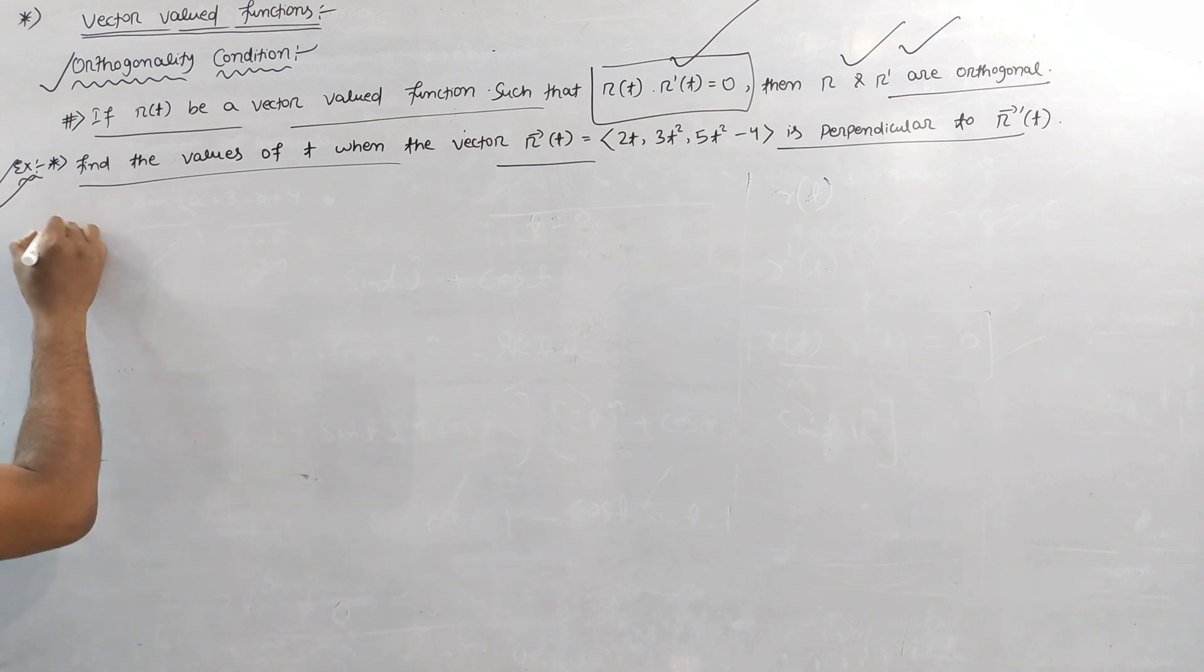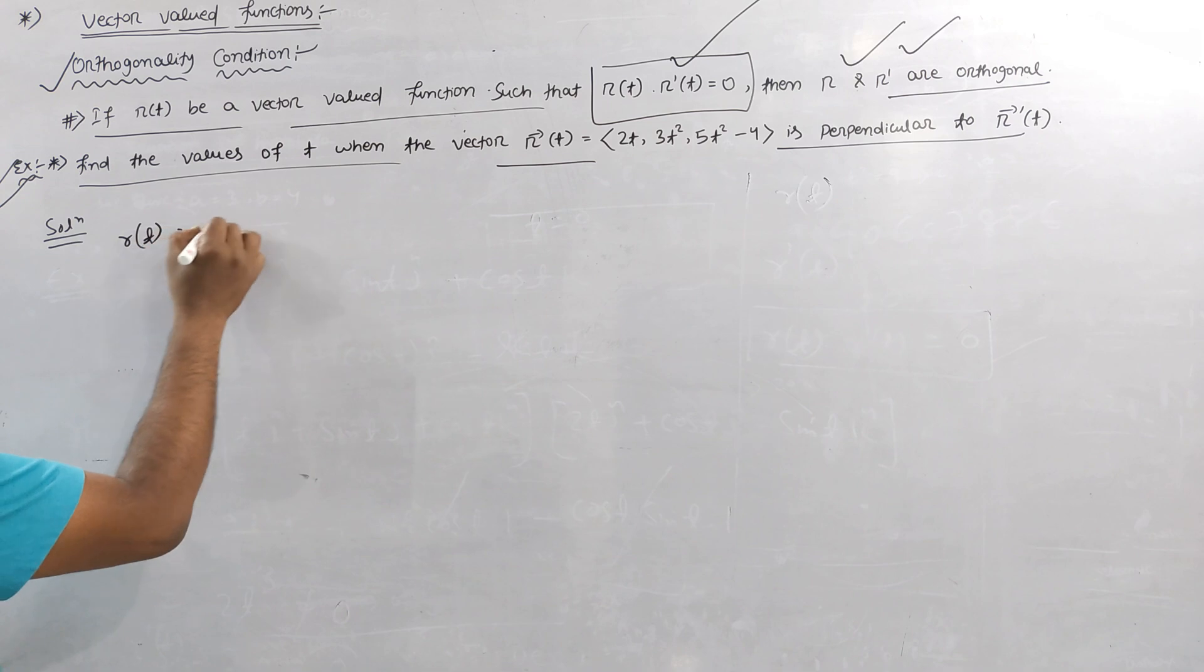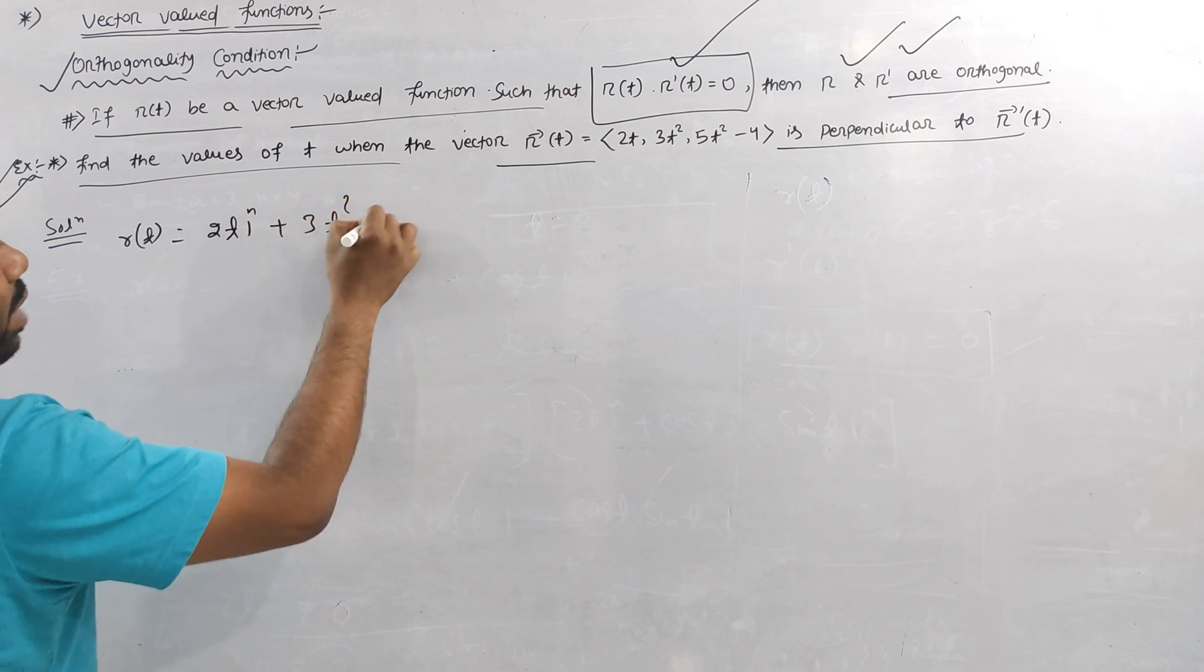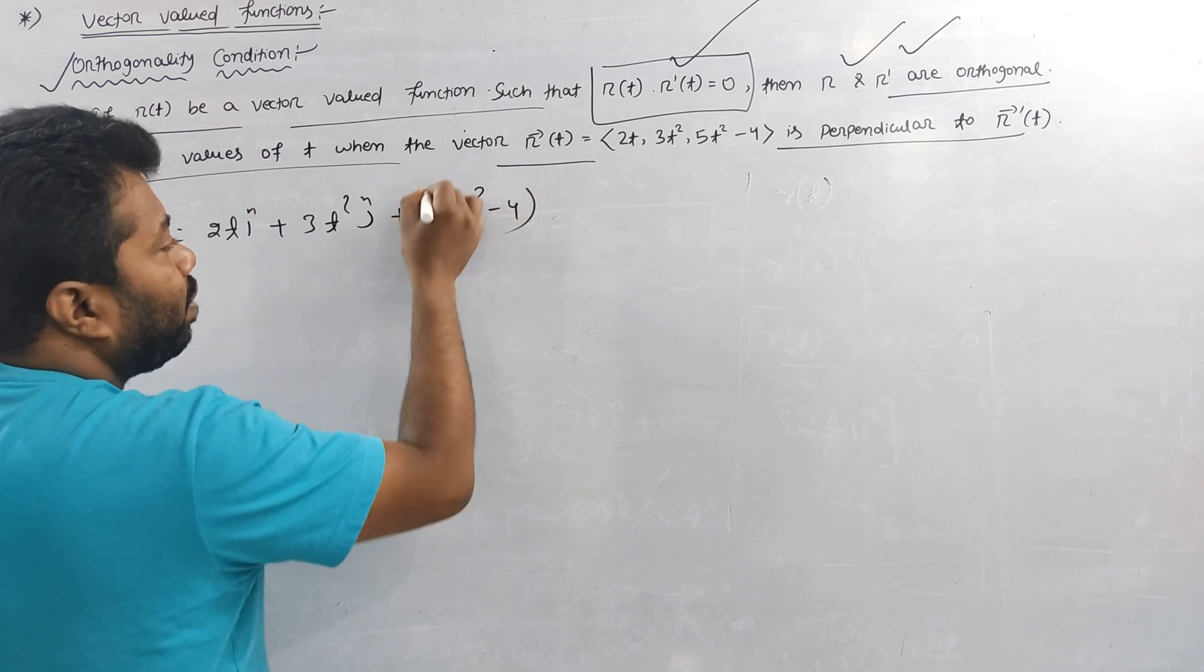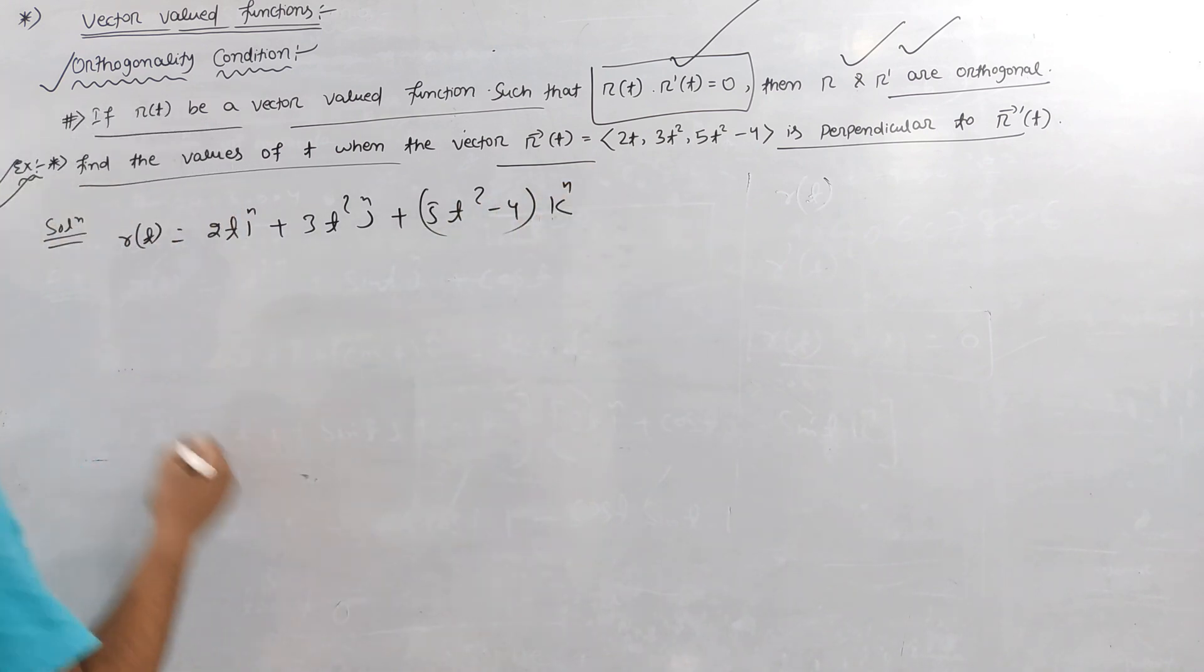First we can show the function. R of t is 2t i cap plus 3t square j cap plus 5t square minus 4 k cap. Then r dash t is 2 i cap plus 6t j cap plus 10t k cap.